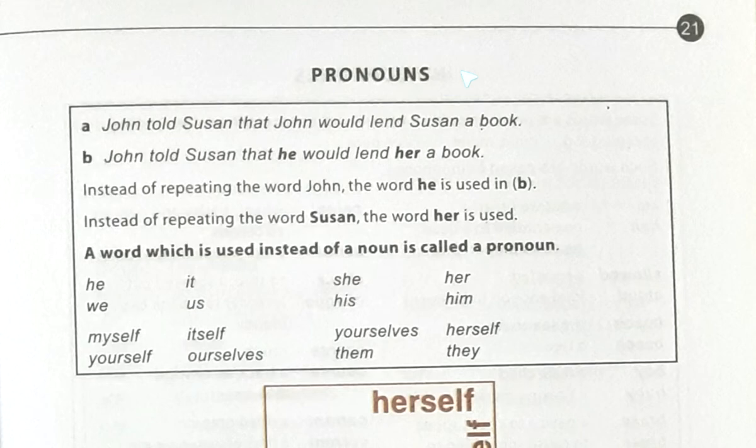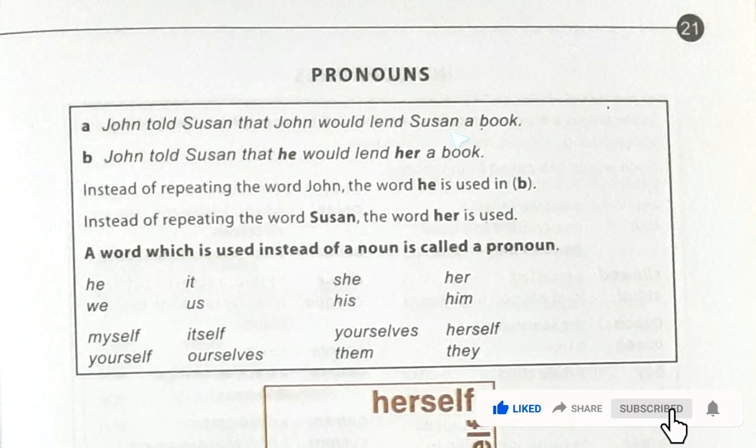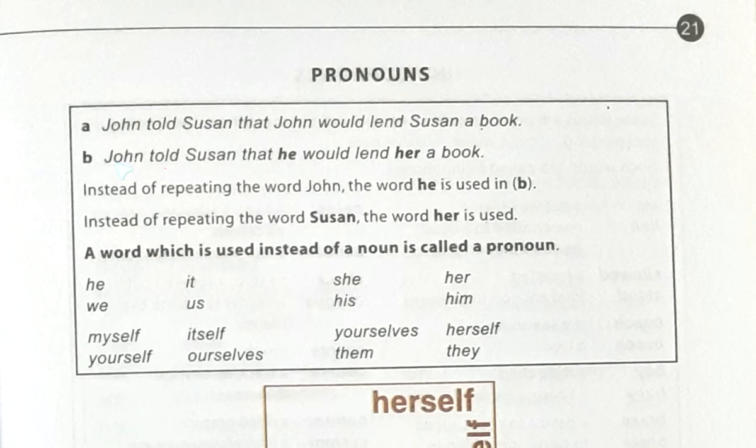Hello everyone, today I'm going to discuss Junior English Book 4, page number 21. Today's topic is pronouns. What is a pronoun? Let's see. Here it is written: 'John told Susan that John would lend Susan a book.' Then: 'John told Susan that he would lend her a book.' Instead of repeating the word John, the word 'he' is used in its place.